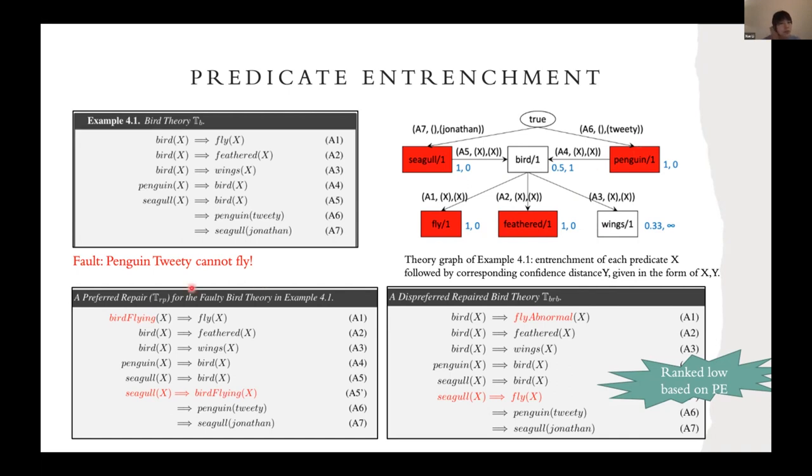Here we imagine that it's following our common sense. The benchmark gives you the fact that penguin Tweety cannot fly. So the original data is faulty and can be repaired in different ways.